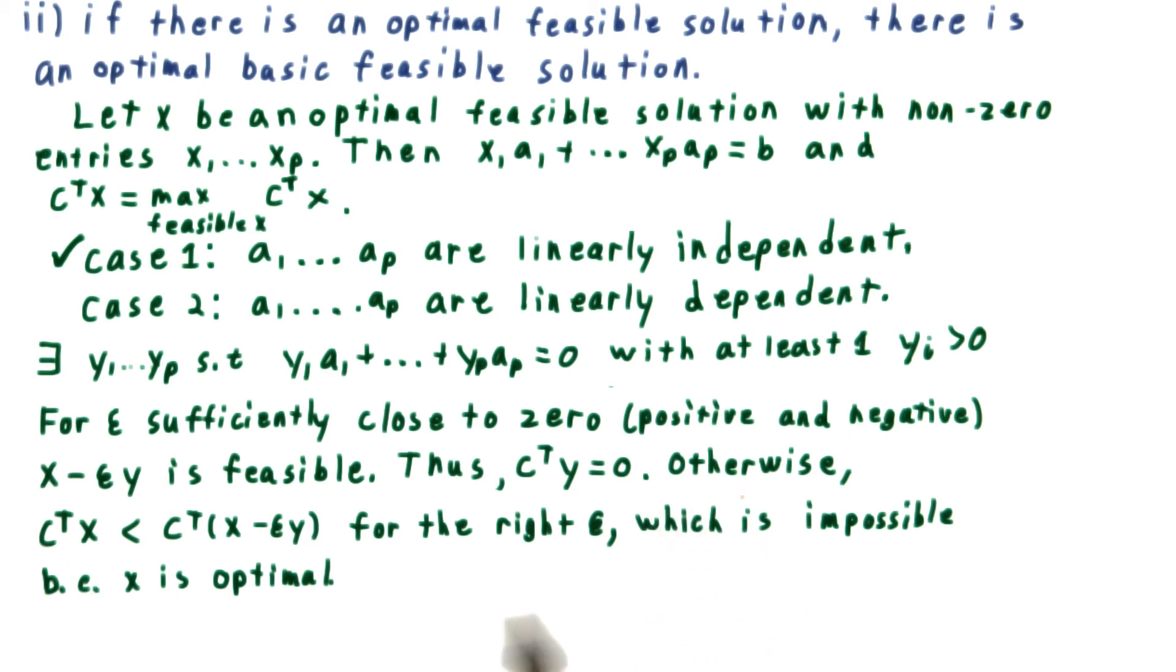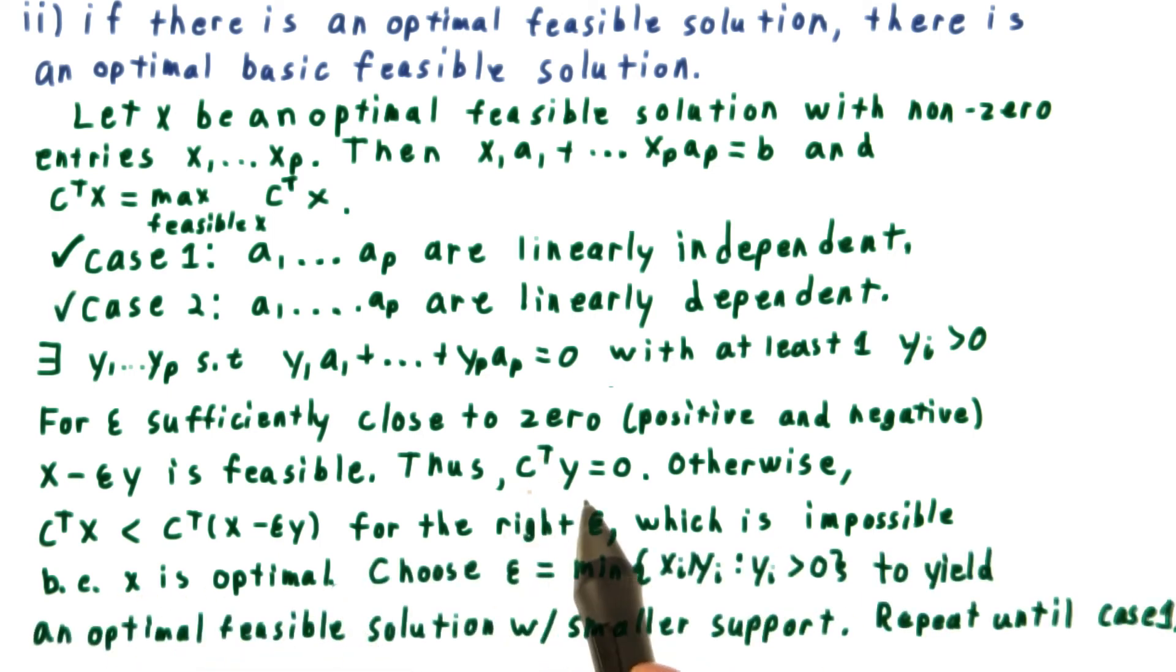If it weren't, then c transpose x would be strictly less than c transpose times x minus epsilon y. We can choose the right sign on epsilon so that this inequality holds. But this is impossible because x is optimal. We conclude that c transpose y is equal to 0, and then we can choose epsilon to be the same thing we chose it before.